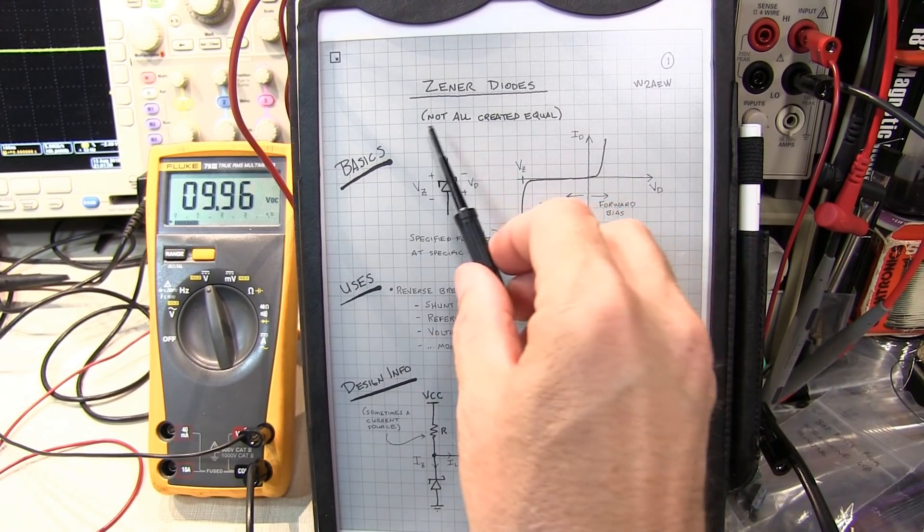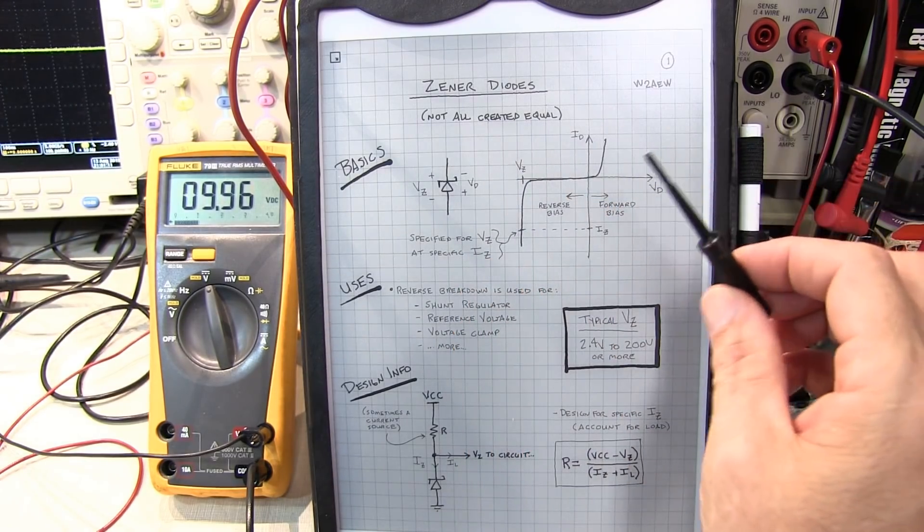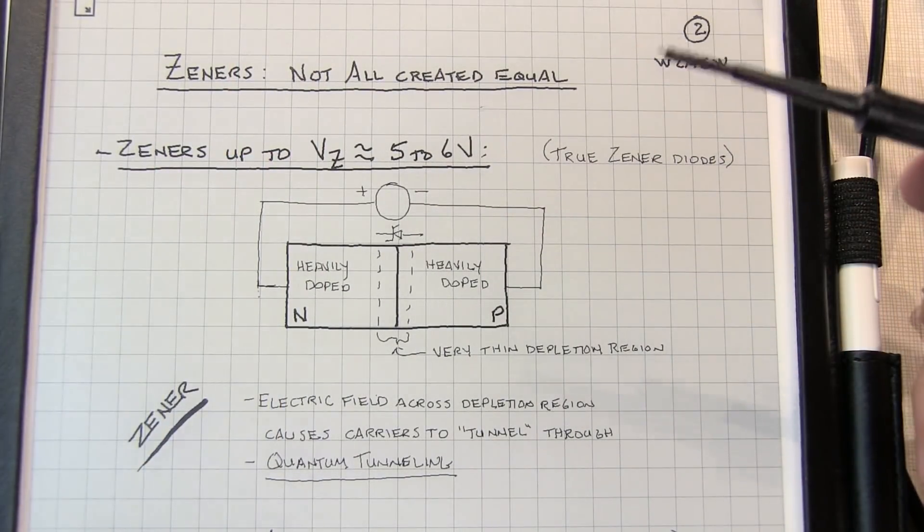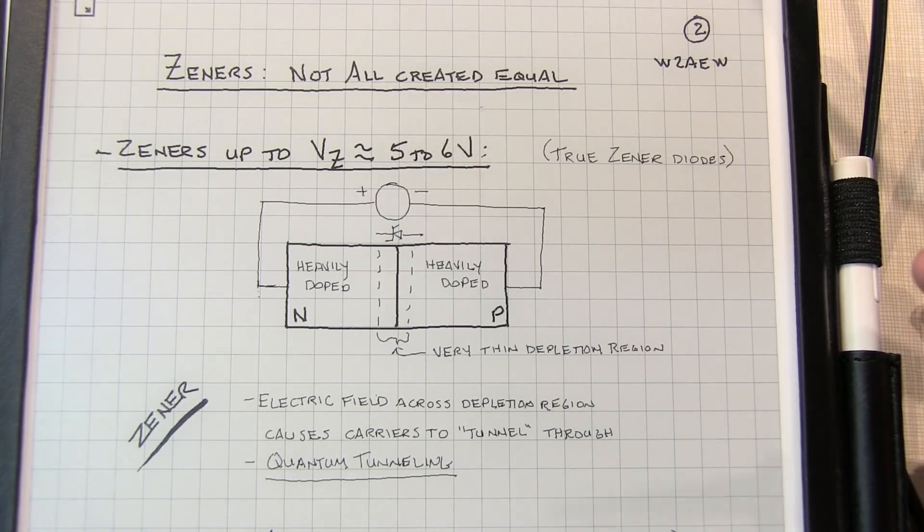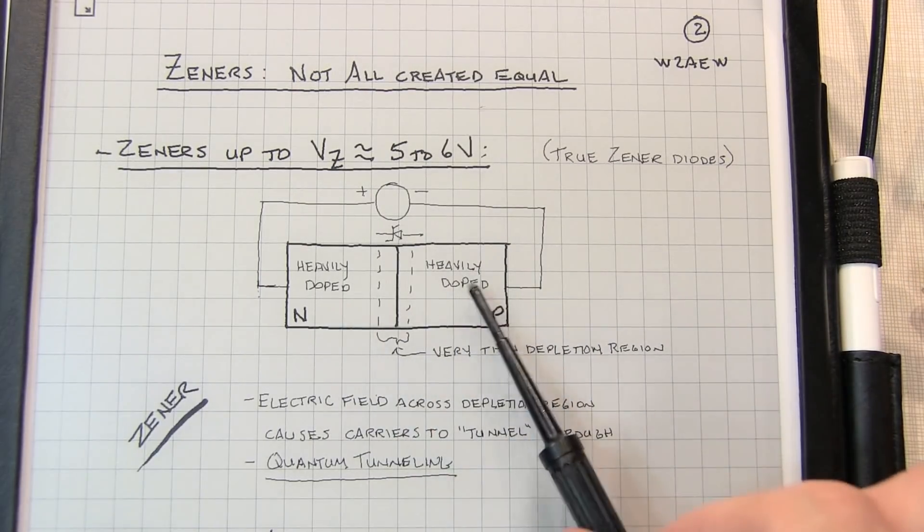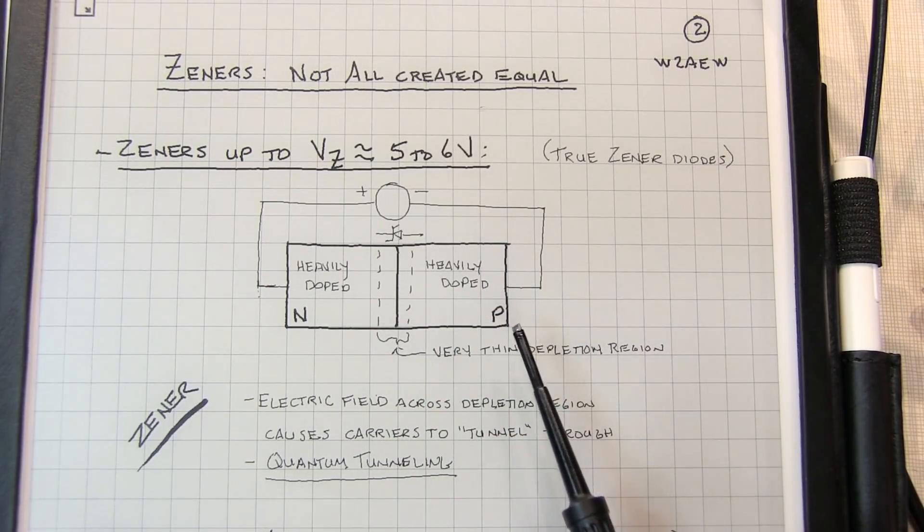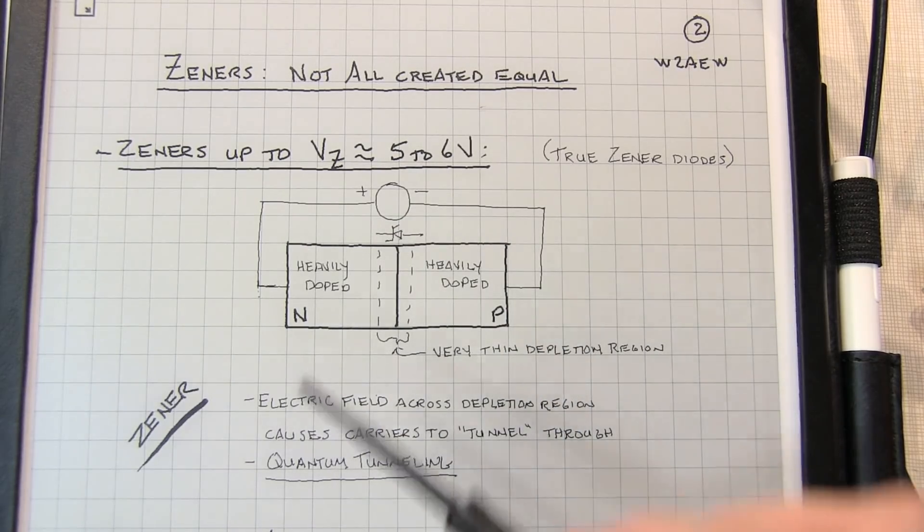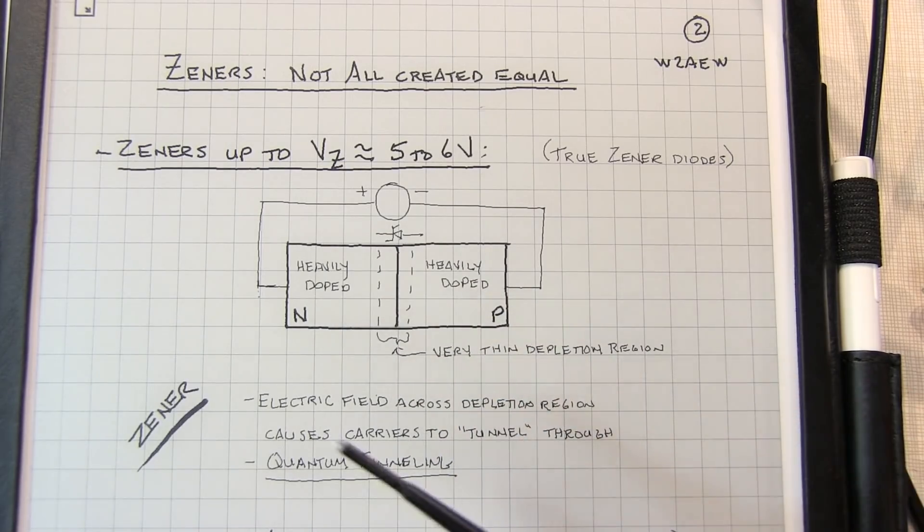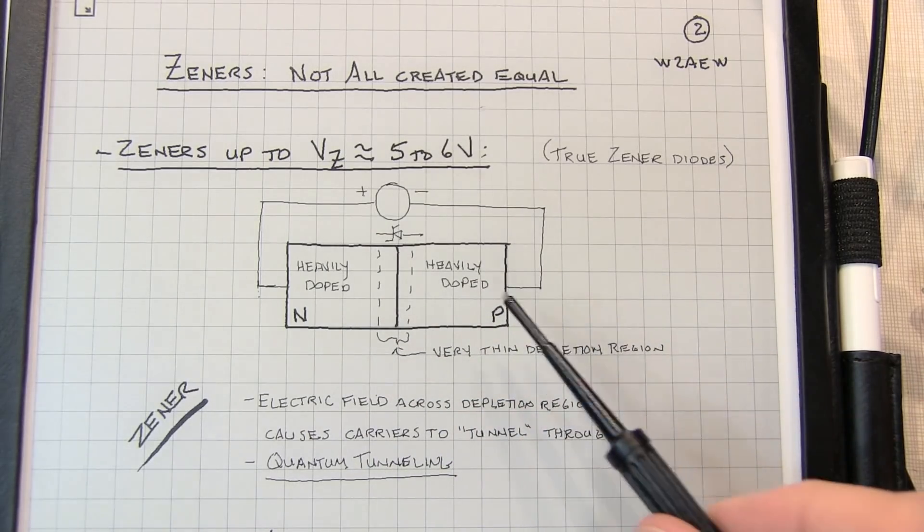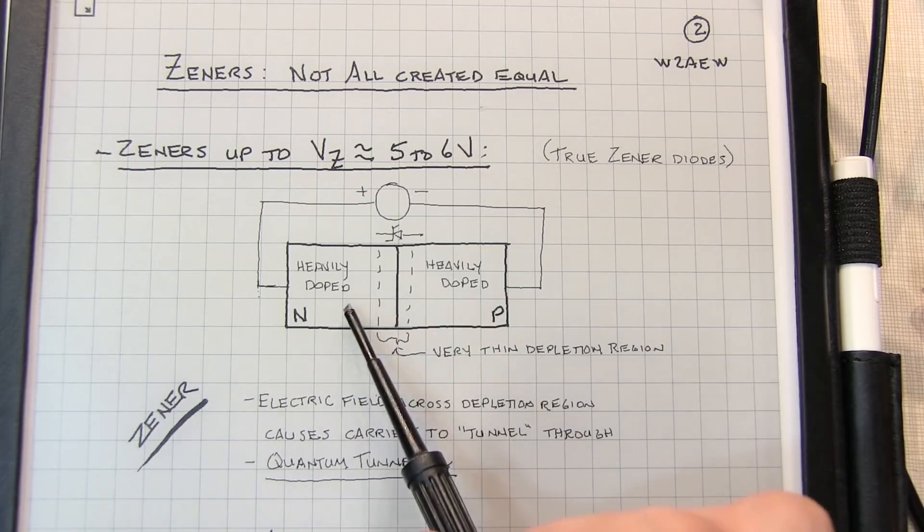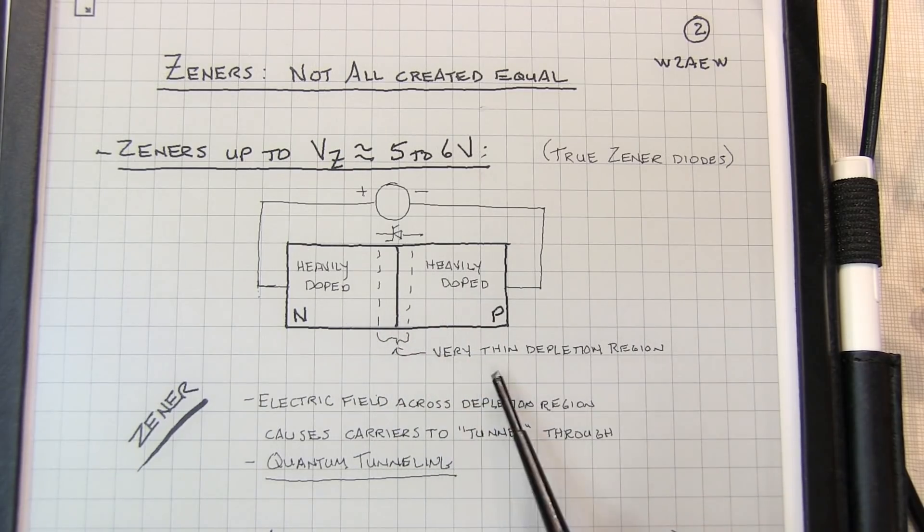Now remember I mentioned at the beginning that not all Zener diodes are created equal. To take a look at what I mean, we've got to look at a little bit of the physics, but don't worry we're not going too deep. Zener diodes, like any other diode, are made by putting together two semiconductor materials, a P-type and an N-type material. In the case of Zeners, the P and N materials are very heavily doped, meaning they've got a lot of free carriers. When you reverse bias them, a depletion region forms.